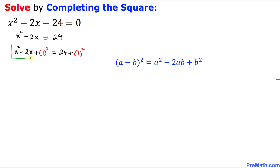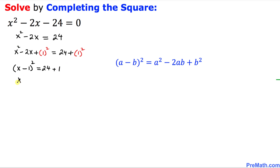The left hand side is now a perfect square. Using the identity (a − b)² = a² − 2ab + b², the left side becomes (x − 1)². On the right, 24 plus 1 equals 25, so we have (x − 1)² = 25. To solve for x, we take the square root of both sides. The square and square root cancel, leaving x minus 1 equals positive or negative 5.